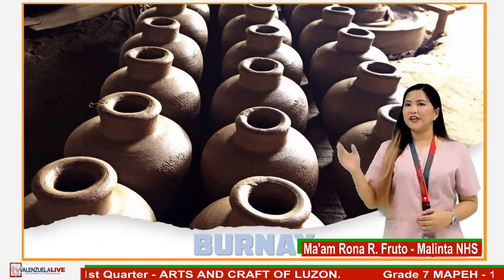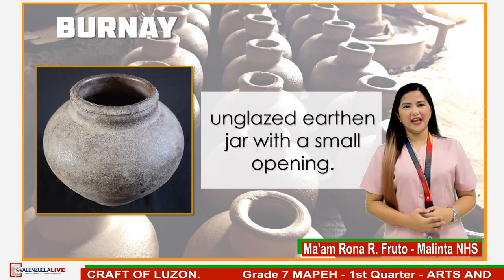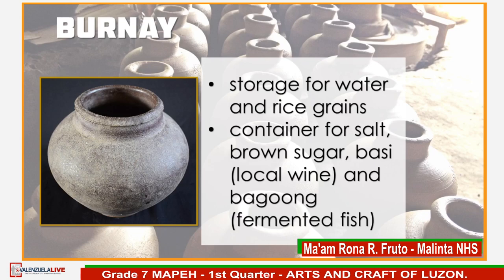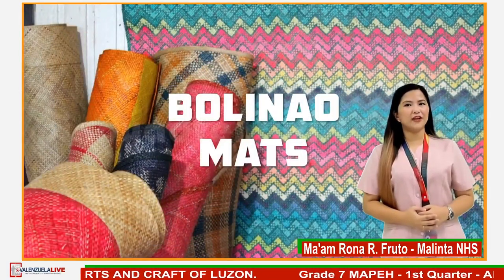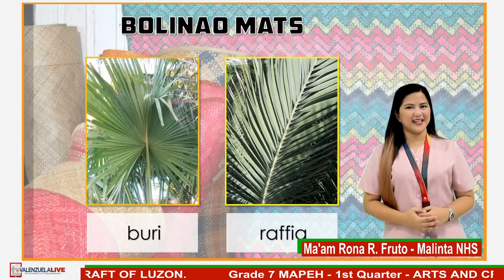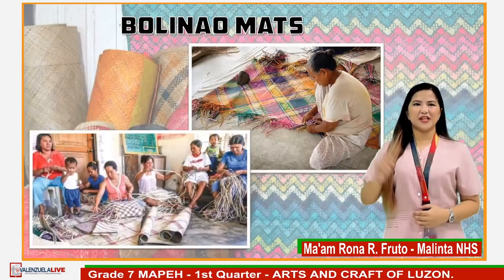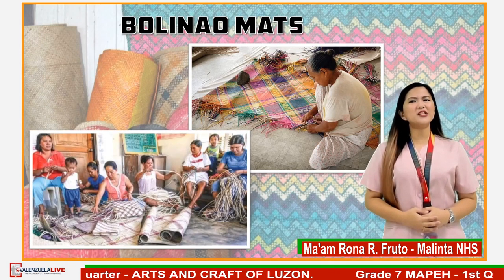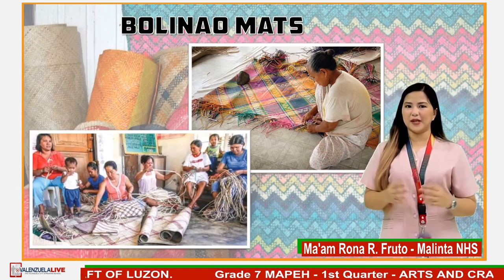Vigan is known for its pottery. These jars are called Burnay, a glazed earthen jar with a small opening. It is made of clay and commonly used for storage of water, rice grains, and as a container for salt, brown sugar, basi, a local wine, and bagoong, fermented fish. Bulinaw mats are smoothly woven mats made from buri or raffia leaves from Pangasinan. The most common design is geometric patterns like zigzags and plaits. Before, when a man wanted to court a woman, he must be able to learn preparing the fiber for weaving. Only then would the woman's mother give permission for courting her daughter.